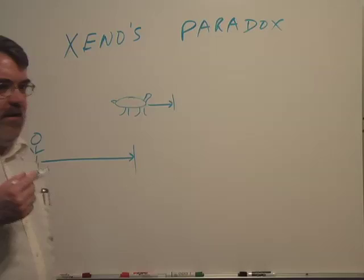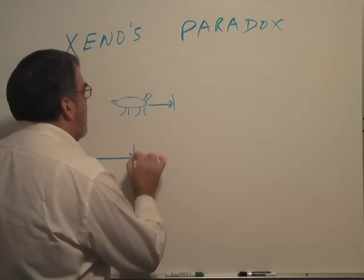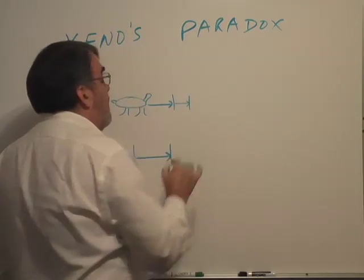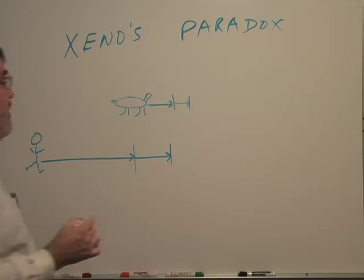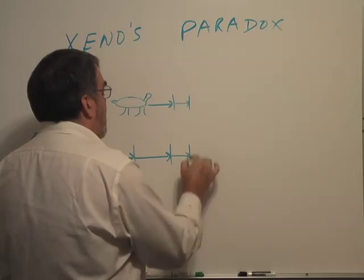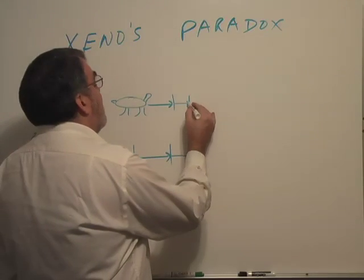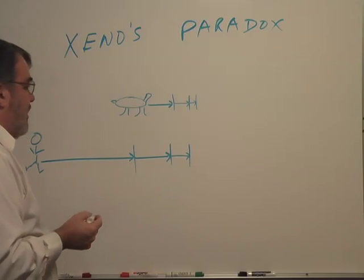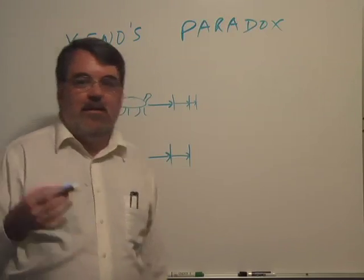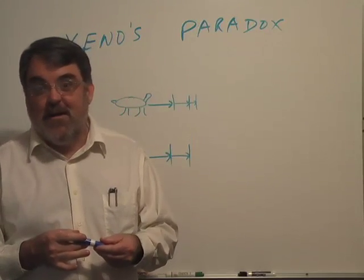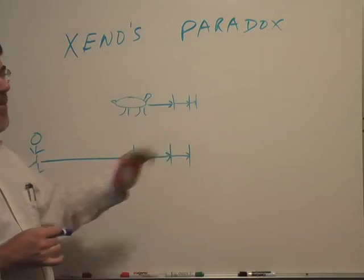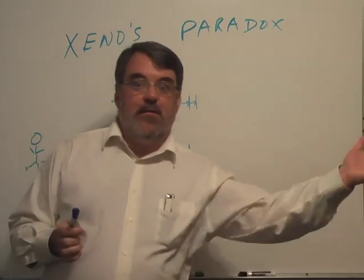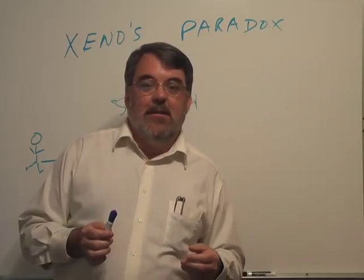In the second stage of this race, Achilles runs up to where the turtle was, and the turtle has moved forward. In the third stage, Achilles moves up to the place where the turtle was at the end of the second stage, and the turtle has moved ahead again. He says, look, you can continue this process ad infinitum, ad nauseam, and yet Achilles is never going to catch the turtle. So when you see Achilles run past the turtle, it's an illusion of the senses.